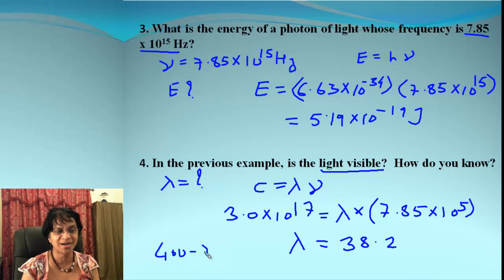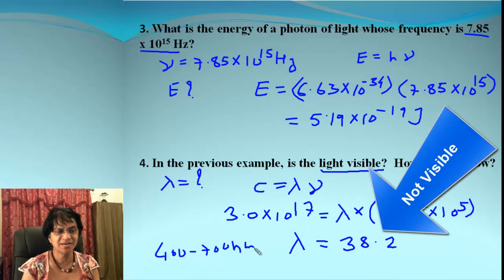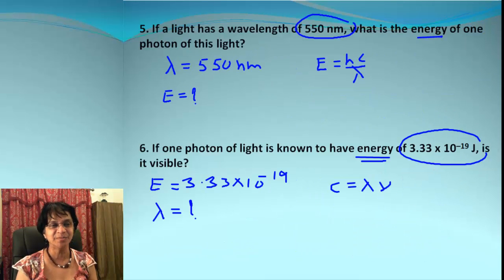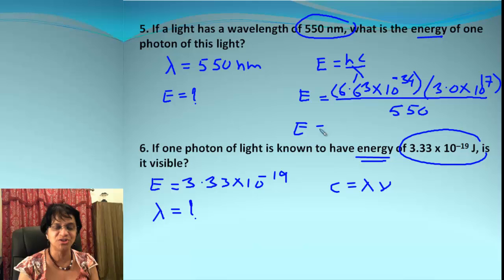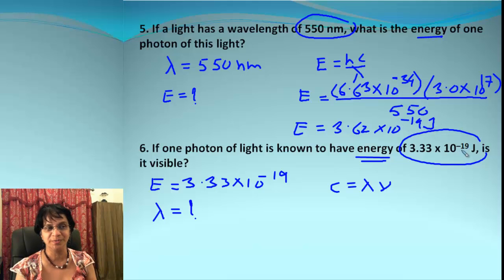Moving on to next problem, we got wavelength here and our job is to find out energy. So the formula is E = hc/λ. When we plug and check, this is what we get, and when we solve for energy, that is finally 3.62 × 10^-19, and the unit is joules.